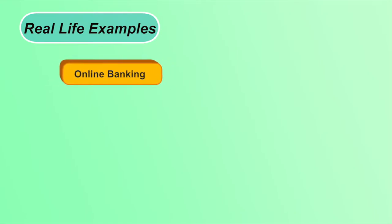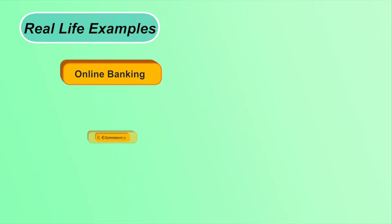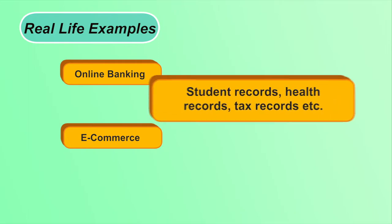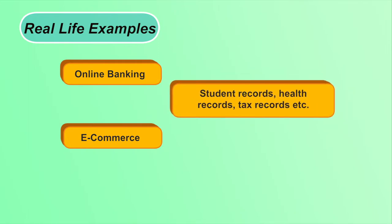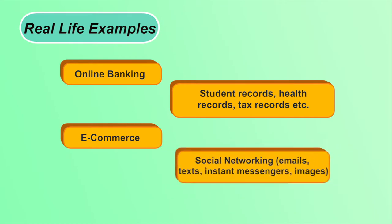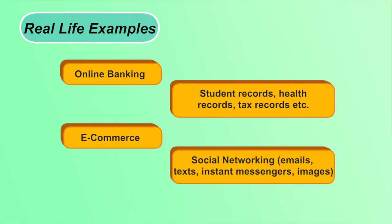Real-life examples of cryptography: In online banking, whenever you type your password it is first encrypted then sent to the server for authentication. In e-commerce websites, debit card information is saved in encrypted form. Student, health, and tax records are all saved in encrypted form so that no one can misuse our personal information. In social networking like WhatsApp, messages are shared between sender and receiver in encrypted form.